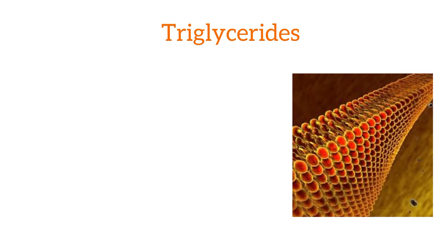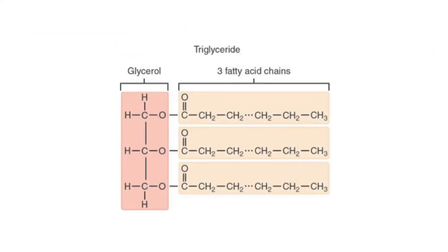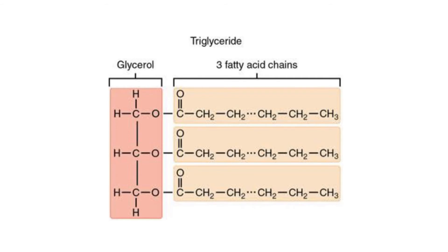Triglycerides are used for different purposes, mostly by animals and plants. Triglycerides help to prevent water loss, store fats, provide a barrier against microorganisms, and provide thermal insulation. Triglycerides are lipids that contain three fatty acids and glycerol, which is propane-1,2,3-triol, making up very large esters. Triglycerides are a type of fat found in the blood and are the most common type of fat in the body.